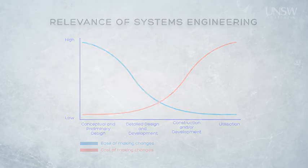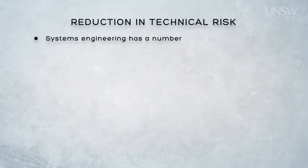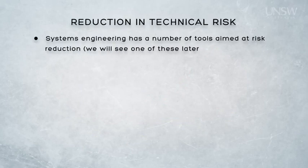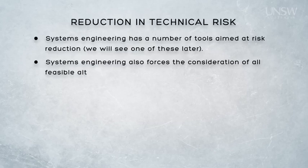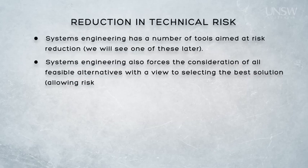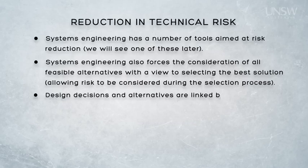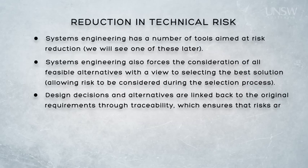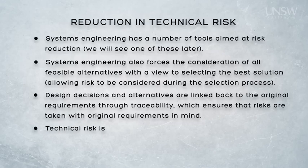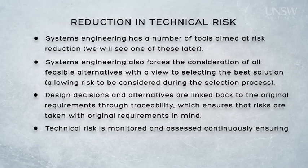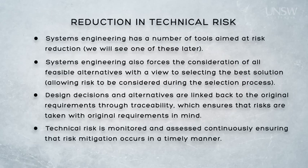It makes sense, therefore, that systems engineering leads to a reduction in the technical risks associated with the system. Risks are identified early and monitored throughout the life cycle. Even early on in the process, a focus on feasibility analysis reduces the risk to the project. Through systems engineering, design decisions can be traced back to the original user requirements, and conflicting user requirements can be identified and clarified early, significantly reducing the risk of failure later in the project. Technical risk is monitored and assessed continuously through technical performance measures and design reviews and audits throughout system development.